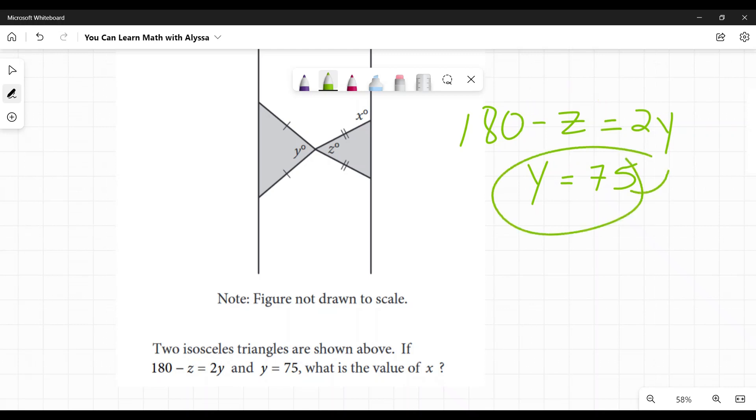So I go, oh, if Y is 75, I can just plug it right in there. So let's do that. 180 minus Z equals 2 times 75. 2 times 75 is 150. Then I'm going to subtract 150 from both sides, and I get 30 minus Z equals 0.